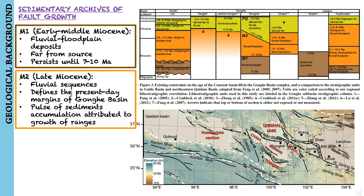The M2 package is characterized by a disruption of early-middle Miocene deposition during the late Miocene by a pulse of sediment accumulation attributed to growth of ranges that define the present-day margin of the Gonghe Basin.